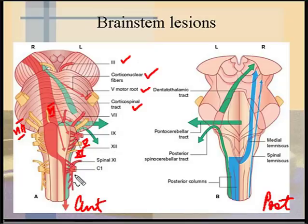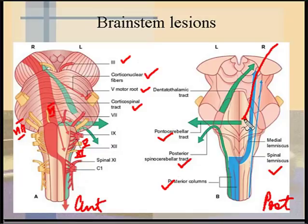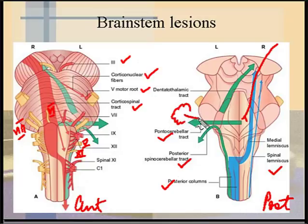On the posterior aspect, it shows the parts of the brainstem and the tracts: the posterior columns, how they cross over and become the medial lemniscus, and the spinal lemniscus traveling upwards. We also have the spinal cerebellar tracts and the pontocerebellar tract, where the cerebral cortex synapses on the pontine nuclei and sends information to the cerebellum. The dentatothalamic tract runs from a nucleus within the cerebellum to the thalamus, completing the circuit: cortex to cerebellum and back to thalamus to cortex.